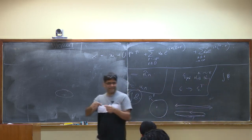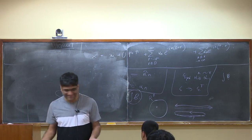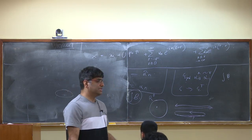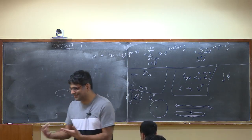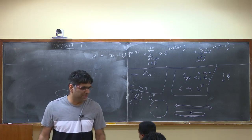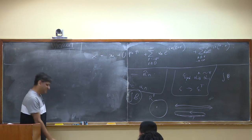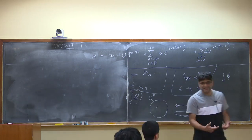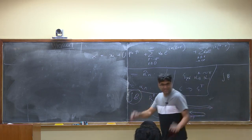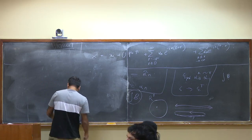In the unoriented theory the only allowed winding number is zero because strings can break. You can take a wound configuration and smoothly deform it to nothing, so there's no conserved charge. We'll see that an unoriented theory is inconsistent unless it also has an open string sector — the closed string can break into an open string, which is only permissible because there is no conserved charge.